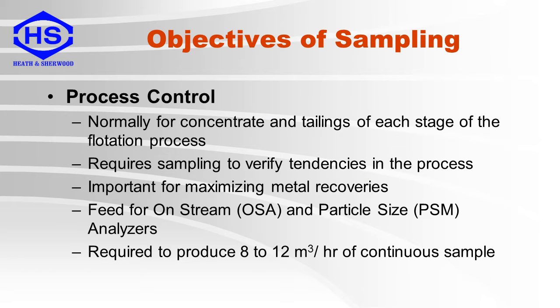These are the properties of process control samplers. They are normally for concentrate and tailings of each stage of the flotation process. They require sampling to verify tendencies in the process and are important for maximizing metal recoveries. They are used to supply a sample to an on-stream X-ray analyzer or a particle size analyzer, and are required to produce 8 to 12 cubic meters per hour of continuous sample.